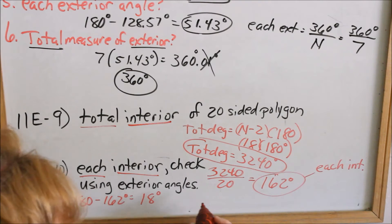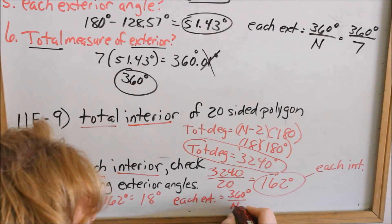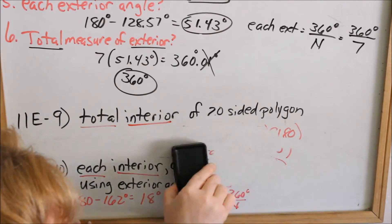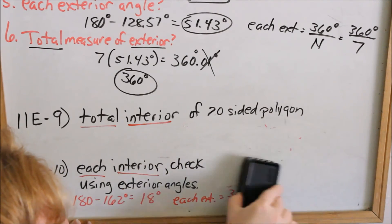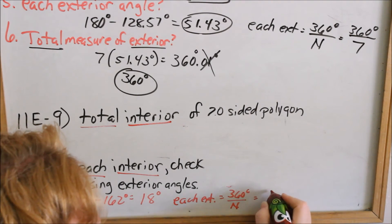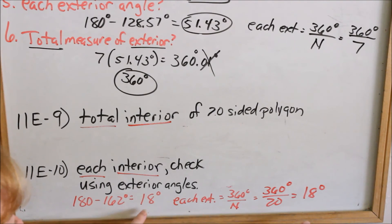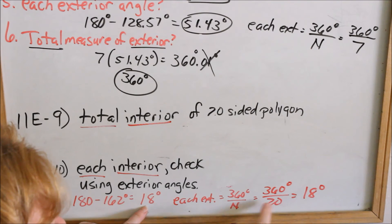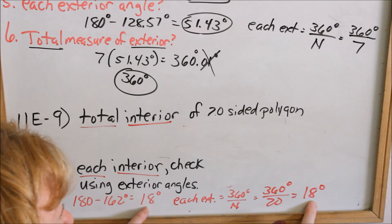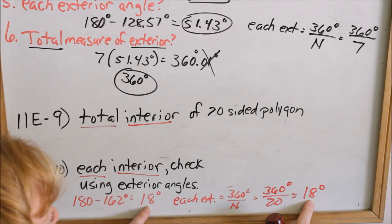Each exterior should be 18 degrees, and I can check that using the formula: each exterior equals 360 divided by n. Our number of sides is 20, so 360 divided by 20 equals 18 degrees. These two numbers check out — I verified it using supplementary angles and also using the formula. When they say to check, there are two ways: confirm interior and exterior are supplementary, and use the formula for each exterior. These numbers should match if it checks.